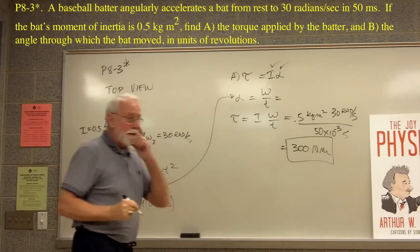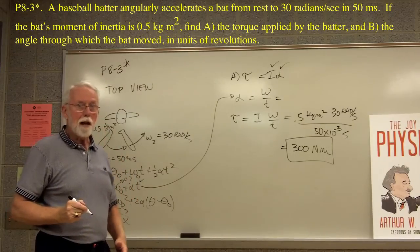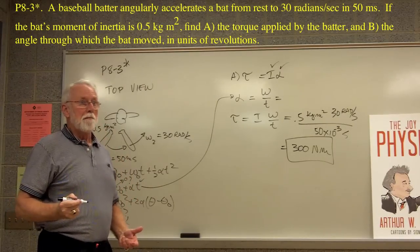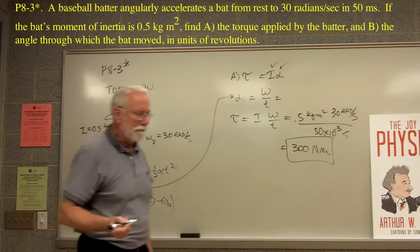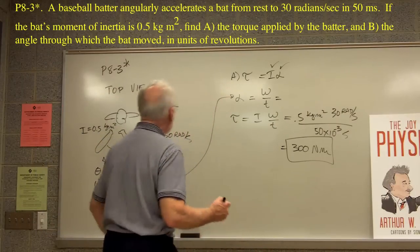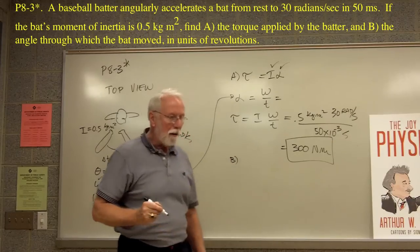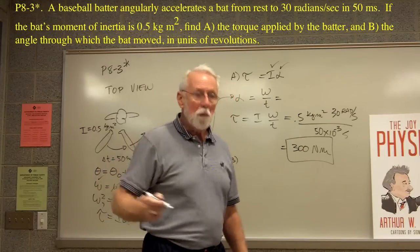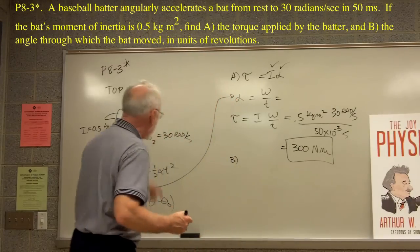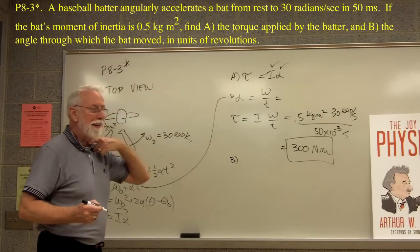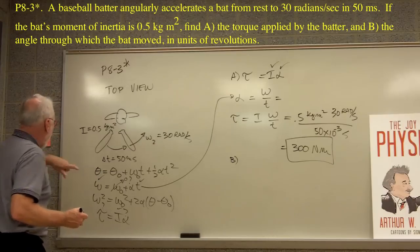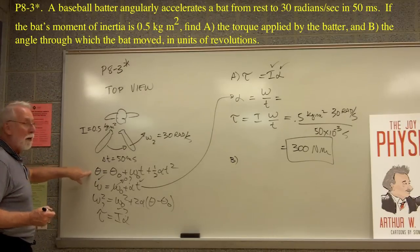So, there's the torque. 300 newton meters. Is that a lot? Not a lot. Hard to judge about torque. You may not have much feeling for that. Okay. There's a B part to the question, and the B part says, through what angle does the bat move in units of revolutions? Angle. You know what that is. Angle. It means we've got to use one of these equations, don't we?